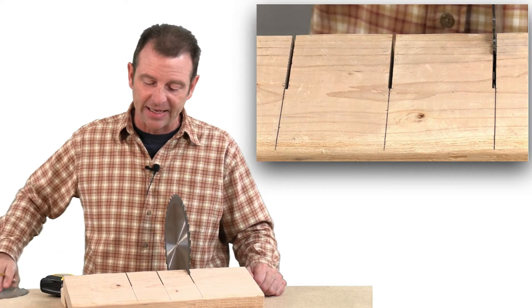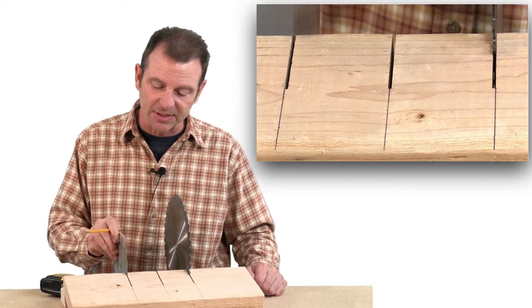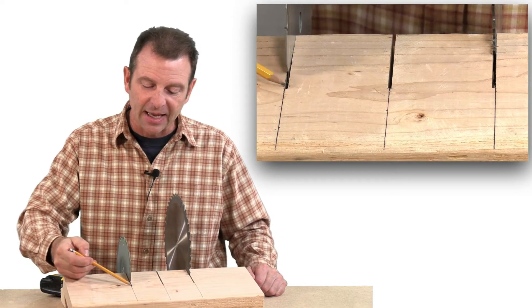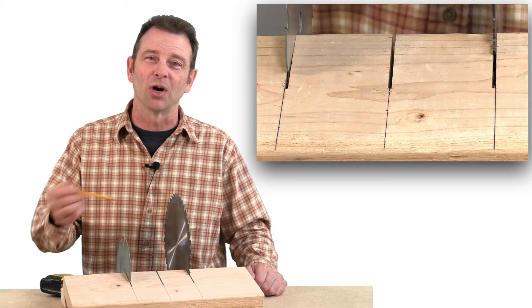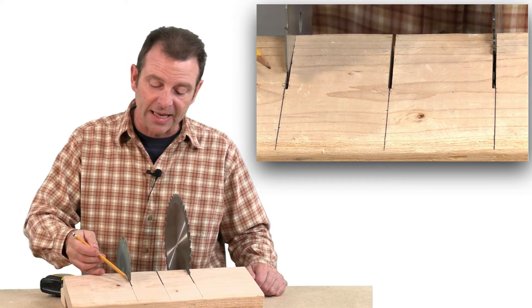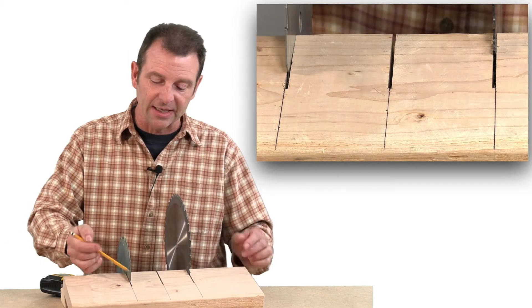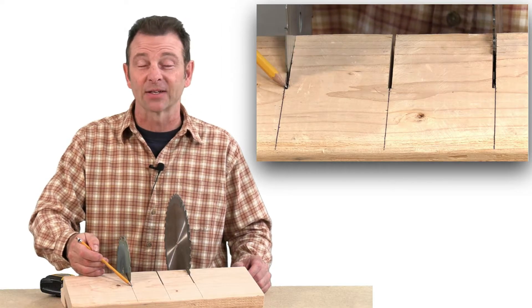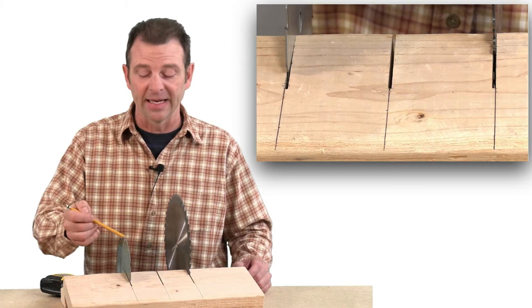As you see here, this blade, as it's passing through this material, has cut a kerf that is on the wrong side of the line. So now my board, once it's cut, is going to be short by the width of that kerf or the width of the blade.